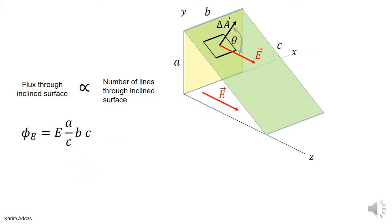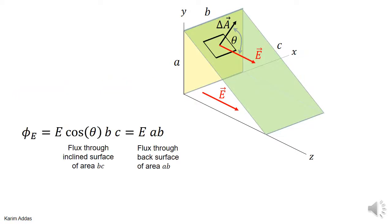When we substitute cosine theta = A/C, we notice there is a C in the numerator from the area (B times C) and a C in the denominator from cosine theta. Those two C's cancel, and we get the electric flux equal to E times A times B.